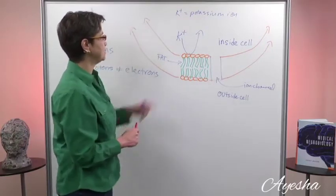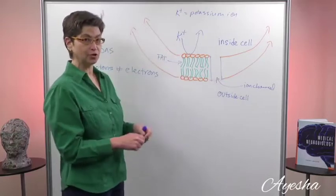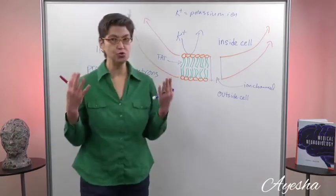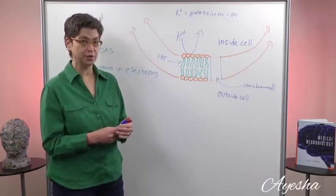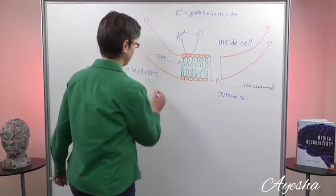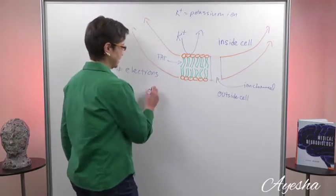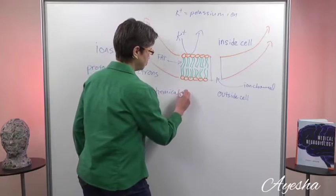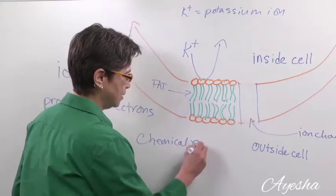Now, how is the potassium going to distribute across this membrane? Well, the potassium has two features. One, it's a chemical. It's a molecule. So as a chemical, it's akin to a food dye.